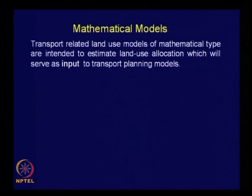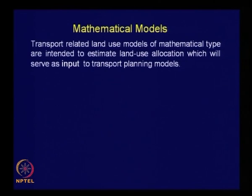Transport related land use models of mathematical type are intended basically to estimate land use allocation, which will serve as input to transport planning models — the models related to the four major steps: trip generation, mode choice, trip distribution and route assignment. Unless you allocate the land use, you will not be able to use the models for horizon year condition. So land use allocation provides the input for all four models.